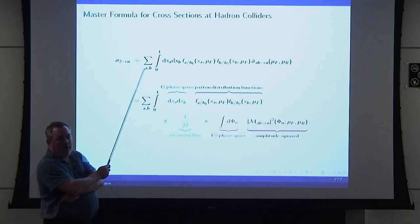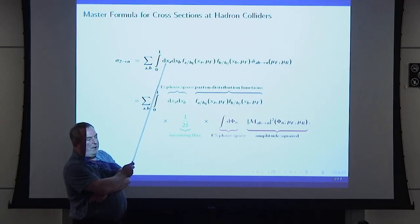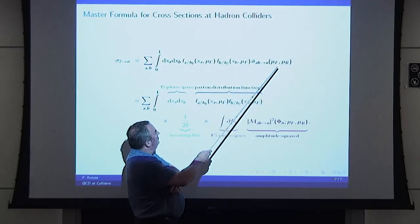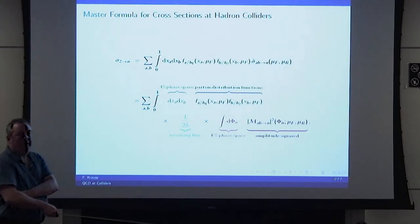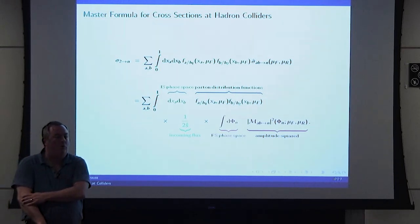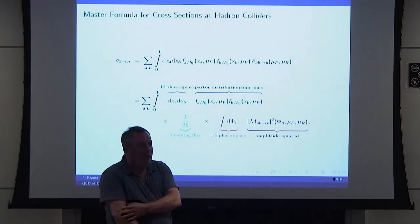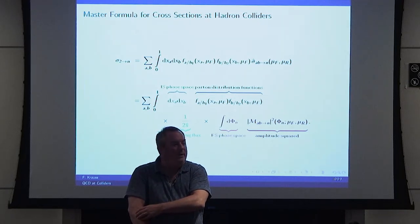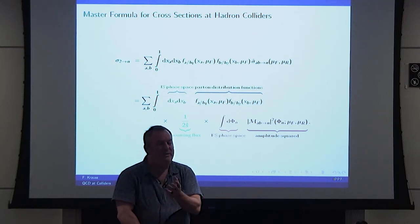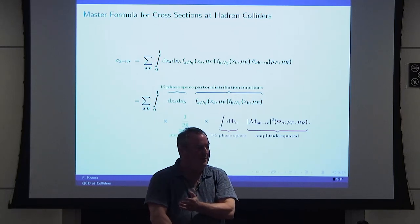Let's say we discuss Drell-Yan, pair production of a muon. We would typically do u-ubar going to muon-muon, d-dbar going to muon-muon, s-sbar, and so on. If you want it more complicated — more particles in the final state — you will have typically many more processes, and in each process many more diagrams. The number of partonic processes scales roughly factorially with the number of final state particles, and the number of Feynman diagrams in each scales roughly double-factorially. So even at tree level, we are not going to have N much larger than 6, 8, or if you're very optimistic, 10.